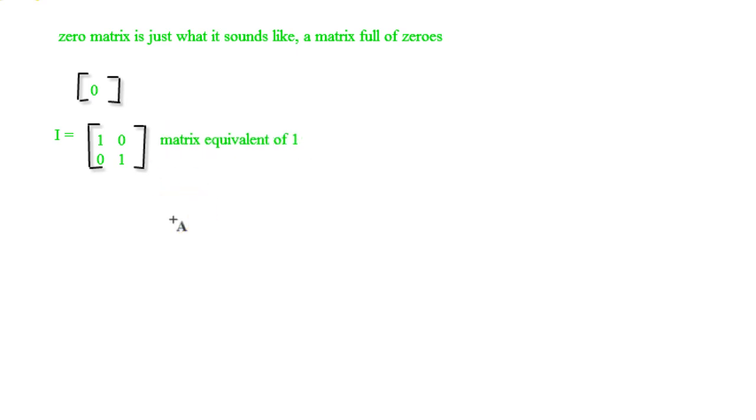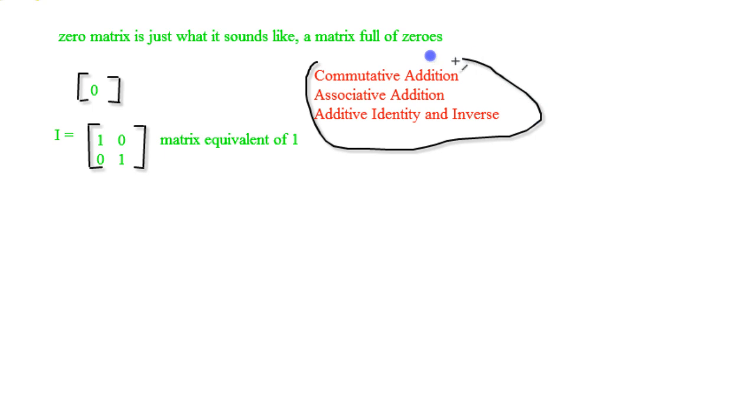So when you're working with this stuff, just be careful to remember that all of the rules that we are used to, these are really the only four properties that you can carry over from real numbers to matrices and they actually are still true. So the commutative property of addition, associative property of addition, additive identity, and additive inverse.